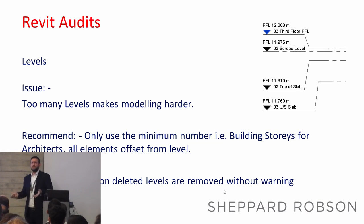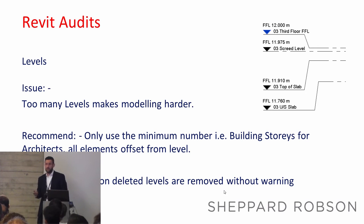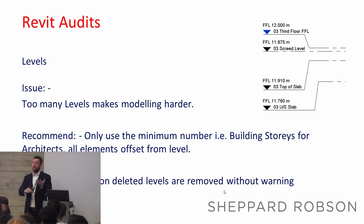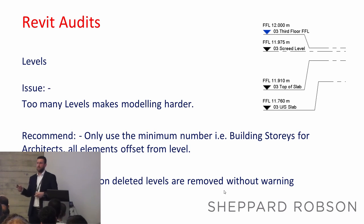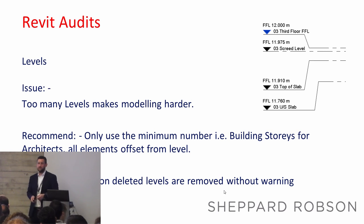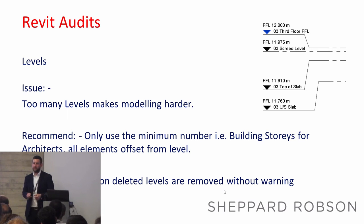Having too many levels in your model is a real problem. If you're drawing a wall, Revit tries snapping up to the next level, or when copying elements they end up on the wrong level. And if you start deleting levels, elements hosted on those levels can be deleted without warning. That becomes an issue when you issue drawings and realise half the elements on a level have disappeared.